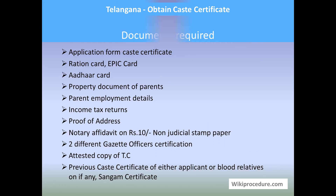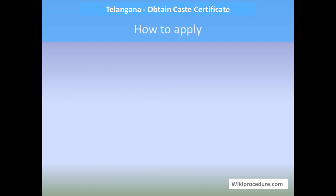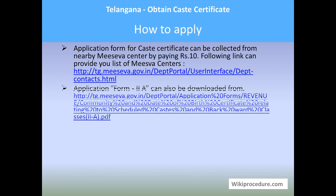The documents required include: application form for the caste certificate, ration card, voter ID or other ID card, property document of parents, parents' employment details, income tax returns, proof of address, notary affidavit on rupees 10 non-judicial stamp paper, two different gazette officers' certification for the applicant, attested copy of TC, previous caste certificate of either the applicant or blood relatives, or a sangham certificate.